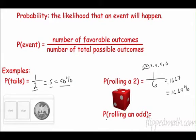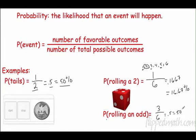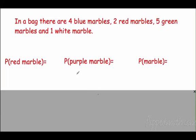What about the probability of rolling an odd number? The odd numbers on a die are one, three, and five — three outcomes. So the probability is three out of six, which equals 0.5, or 50%.